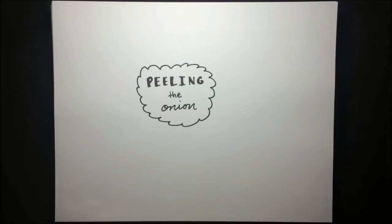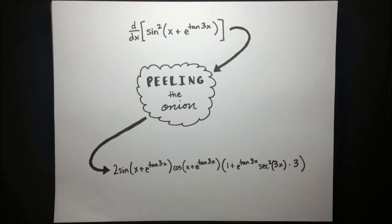In this video, I'm going to teach you how to quickly apply the chain rule multiple times using a technique that I like to call peeling the onion. Using this technique, you'll be able to quickly differentiate complicated functions. And contrary to what the name suggests, this technique is not going to make you cry — it'll actually do the opposite. You'll be able to do these kinds of complicated derivatives without crying, like you would if you had to write out the chain rule over and over again.